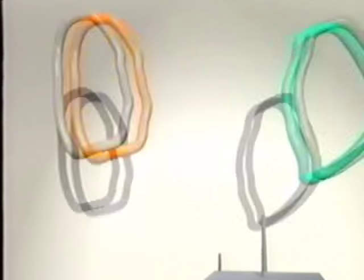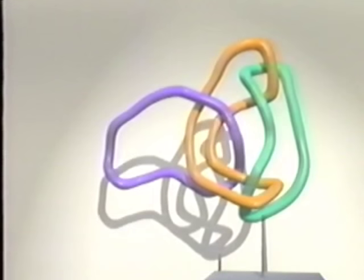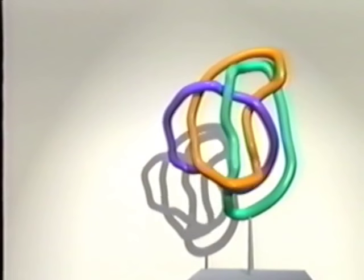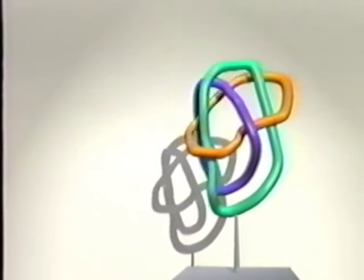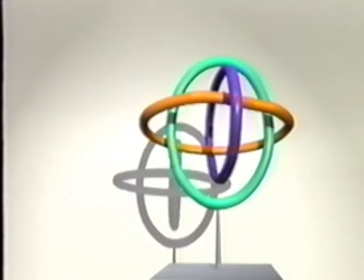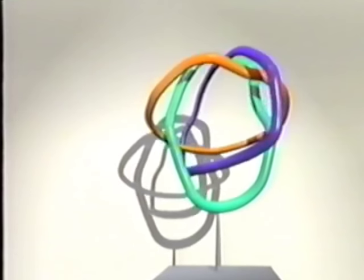Here are three intertwined loops. If you remove any one of them, the other two fall apart. Mathematicians call the union of several loops a link. By rearranging this link, we can see that the three loops are equivalent. Here is another symmetric form of the same link. In this form, it's called the Borromean rings.